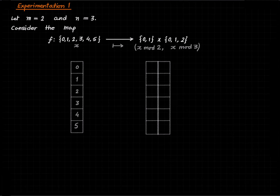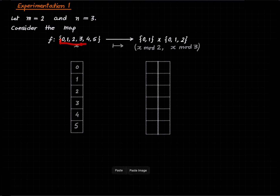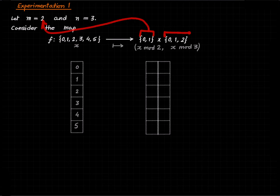Now we define this map. The domain is the set of all the possible remainders that you get when you divide something by m times n, which is 6. This is the set of all the possible remainders modulo 6, modulo 2 or m, and modulo 3 or n.